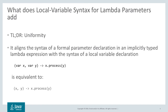How does local variable syntax for Lambda Parameters add? In a nutshell, uniformity. It aligns the syntax of a formal parameter declaration in an implicitly typed Lambda expression with the syntax of a local variable declaration. In short, the two declarations shown here are allowed by the Java compiler and are considered equivalent.